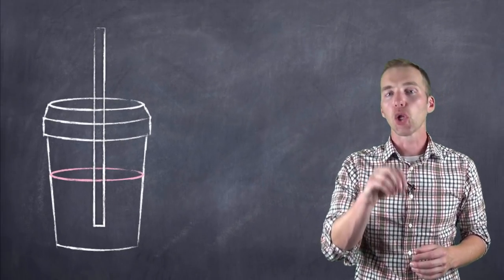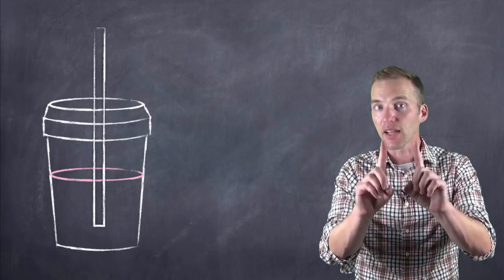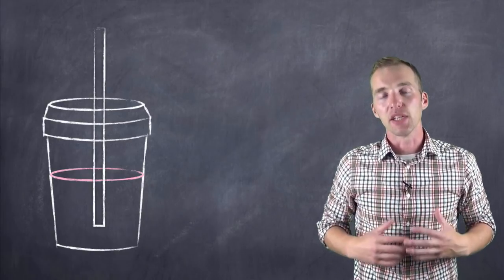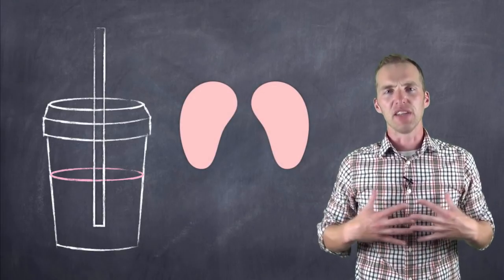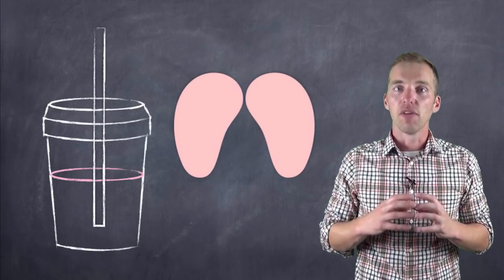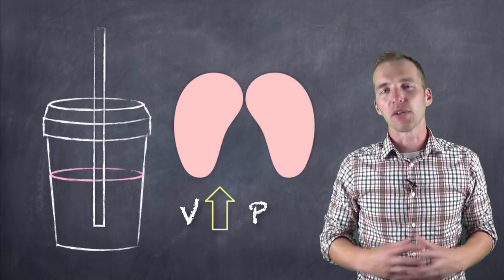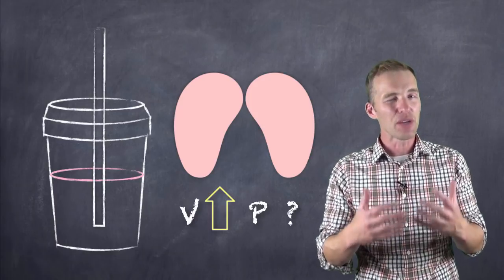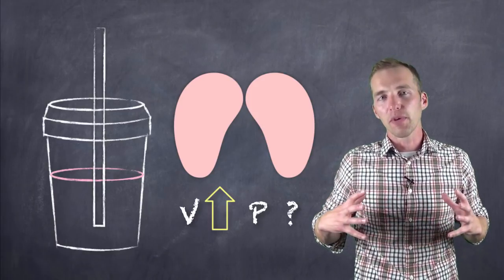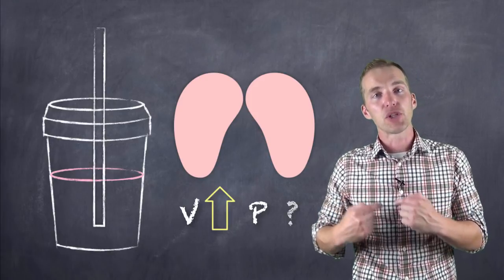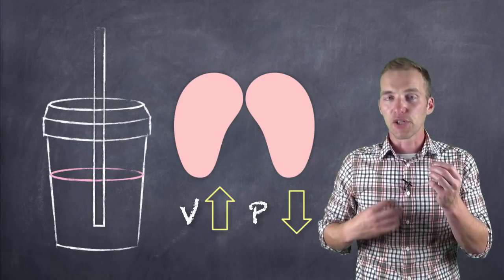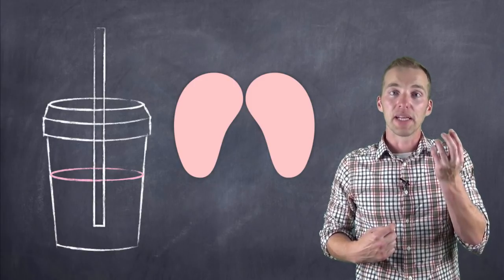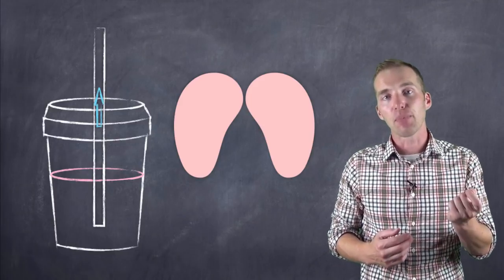When you put your mouth over the straw and create a seal, you're not sucking — remember, nothing sucks in science. What you are doing is breathing in. By breathing in, you're expanding your thoracic cavity — your chest cavity — and your lungs get larger. The volume of the lungs gets larger. What happens to the pressure of the air in your lungs if the volume gets larger? As the volume of your lungs gets larger, the pressure in your lungs goes down. If the pressure in your lungs goes down, the pressure of the air in the straw is now greater than the pressure of the air in your lungs. Gases — air being a gas — move from areas of high pressure to low pressure.